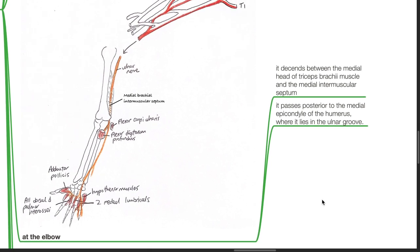At the level of the elbow, it descends between the medial head of the triceps brachii and the medial intermuscular septum. It passes posterior to the medial epicondyle of the humerus where it lies in the ulnar groove.